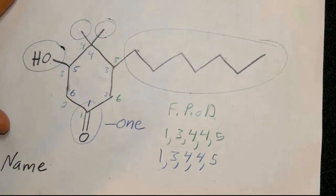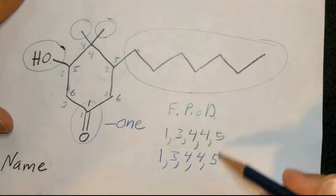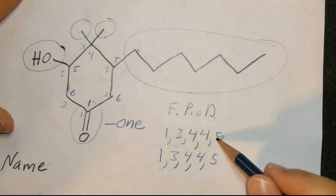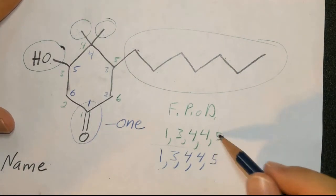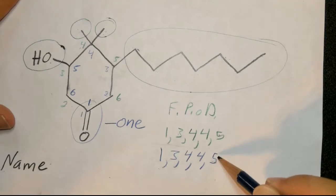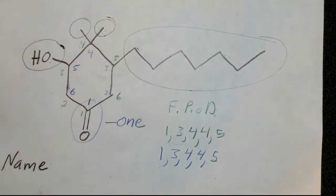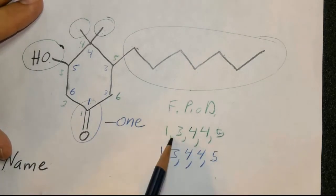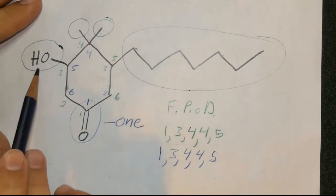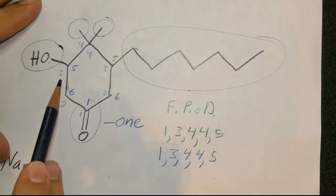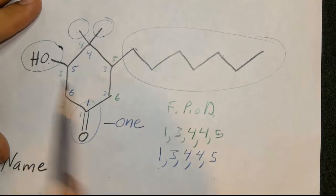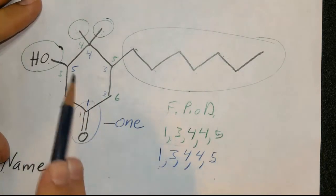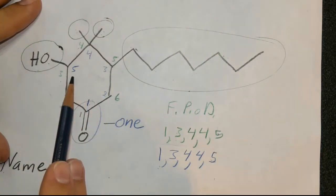So the last thing you do — because you can't leave two different numbering schemes — is go to the last resort. The reason this matters is that in one direction, hydroxy is going to be numbered three, and if you pick the other direction, hydroxy is going to be numbered five. These give different names, so we need a tie-breaker.